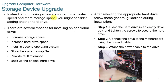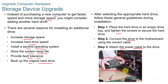You can upgrade storage devices to add more speed or space without purchasing a new computer. Reasons include increased storage, faster hard drive speed, installing a second OS, storing the system swap file, providing fault tolerance, or backing up the original drive. To install, place the drive in an empty slot, tighten the screws, connect the drive and power cable, boot up, and configure through the operating system.